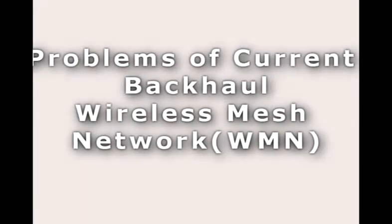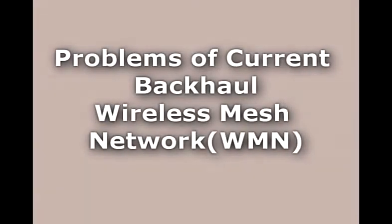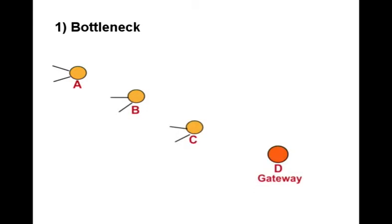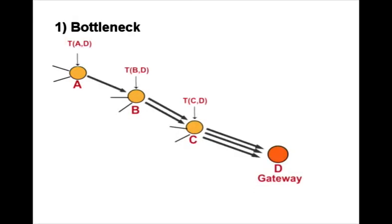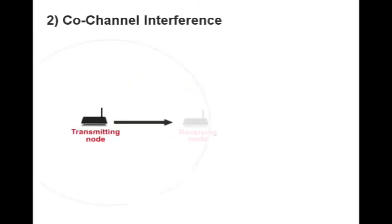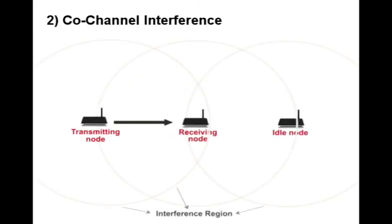We identified some of the problems of current backhaul deployment. First is bottleneck. In a backhaul WMN, as all the nodes forward data to the wired gateway with a particular traffic intensity, some nodes can become a bottleneck or choke point. Another major problem is co-channel interference, which forces a node to sit idle when neighboring pairs of nodes are exchanging data.